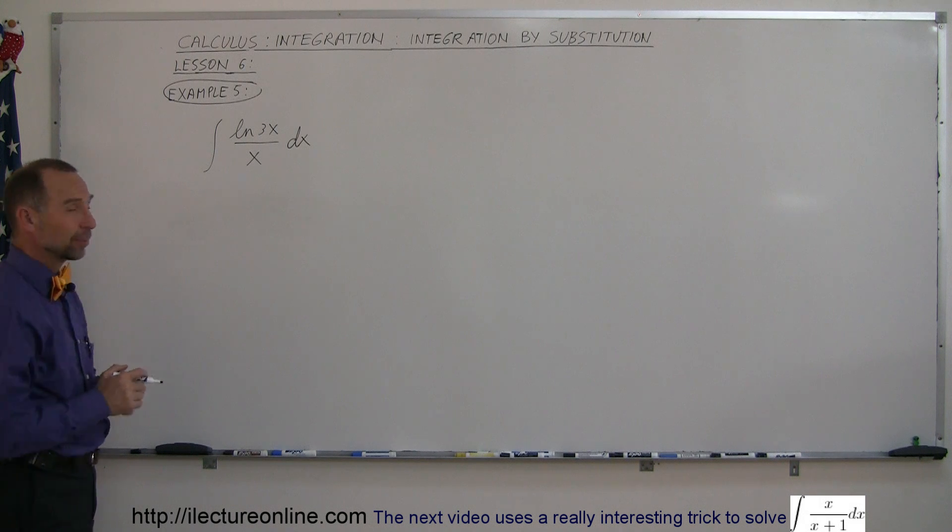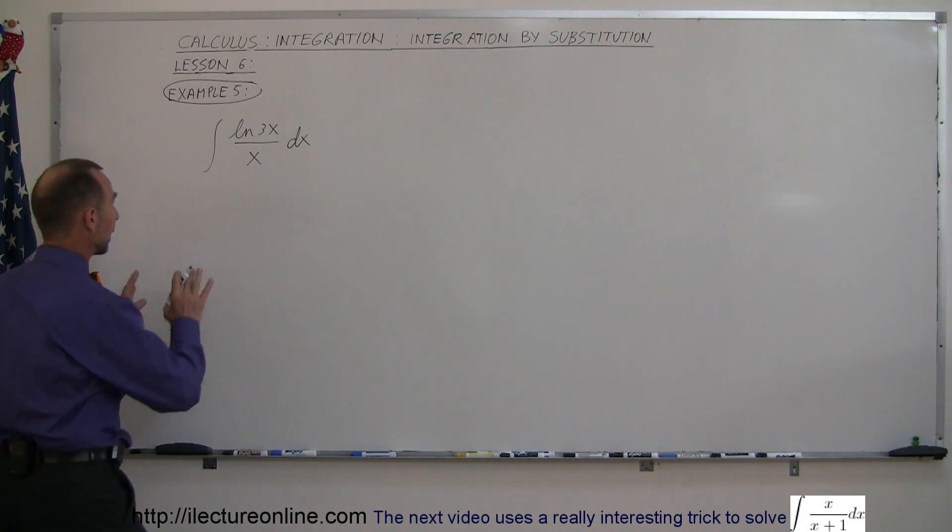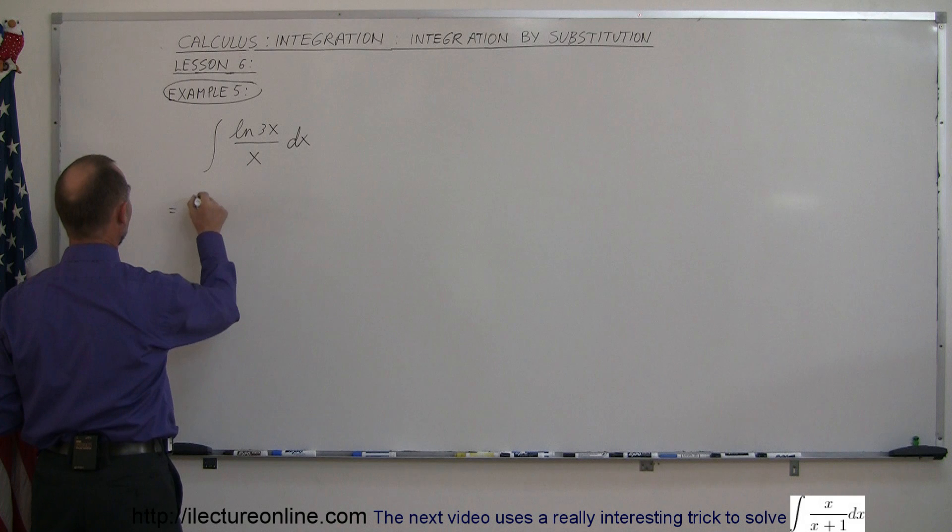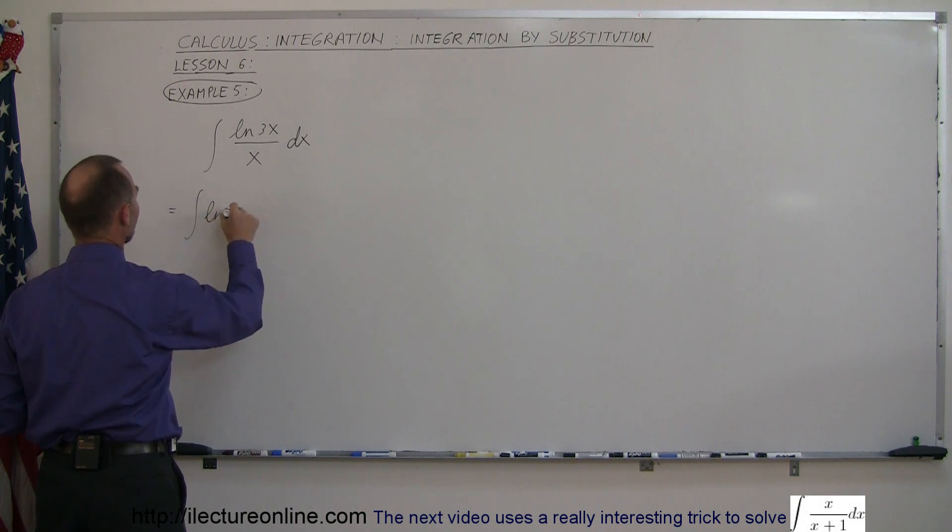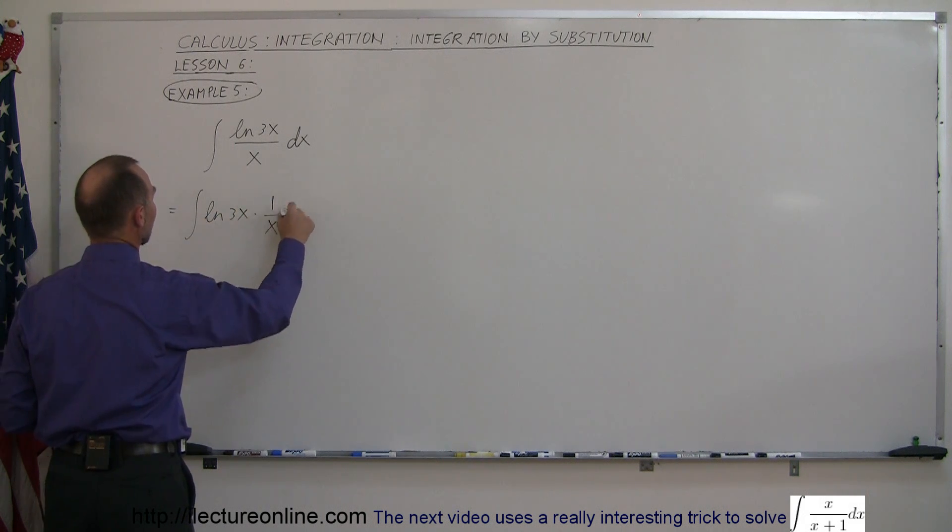Here you say, wow, what do I do with this thing? Well, let me show you a hint here. I'm going to separate this a little bit and write it as the integral of the natural log of 3x times 1 over x dx.